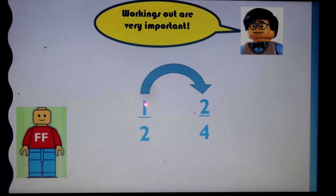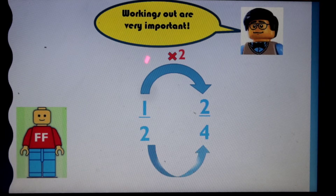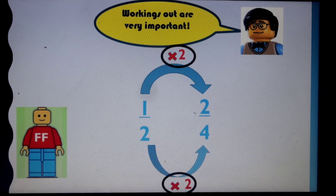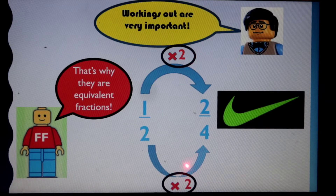First, what you need to do is: what would we multiply by one to make two? The answer is two. If we look at the denominator on the bottom, what must we multiply by two to make four? Yes — two multiplied by two equals four. What we're going to do next is circle the times-by number. If these numbers are the same, it means it's equivalent. So that is why they're equivalent fractions. Make sure you do your workings out multiplying — these two numbers have to be the same.